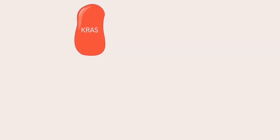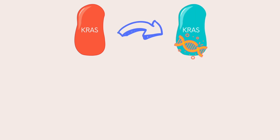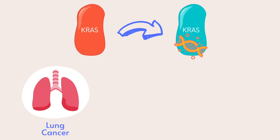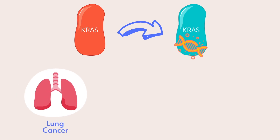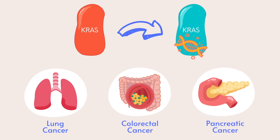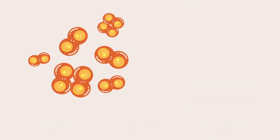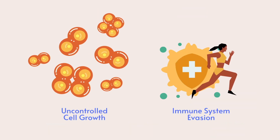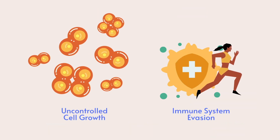The KRAS gene is one of the most frequently mutated genes that causes cancer. Mutations in the KRAS gene are known to cause some of the most lethal cancers such as lung cancer, colorectal cancer, and pancreatic cancer by causing uncontrolled cell growth or immune system evasion.